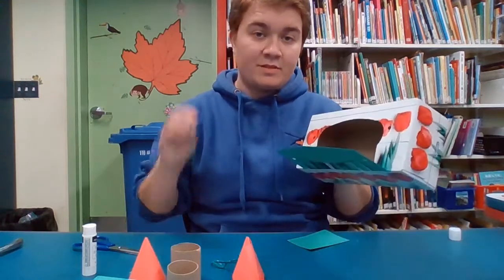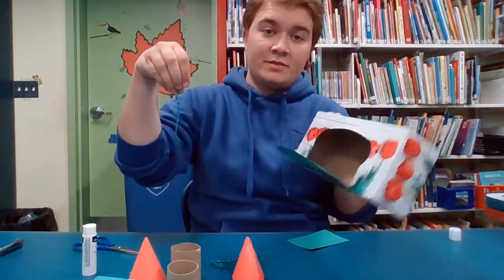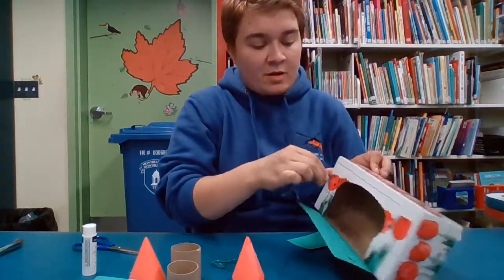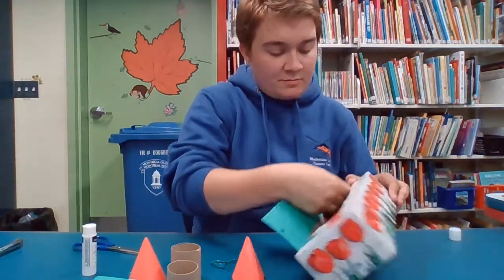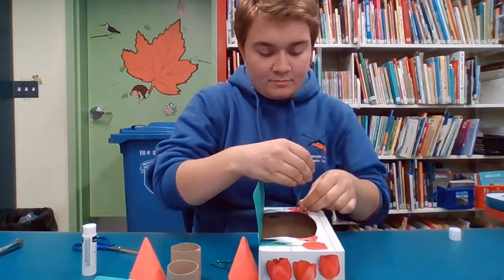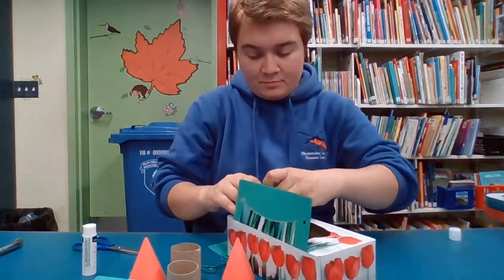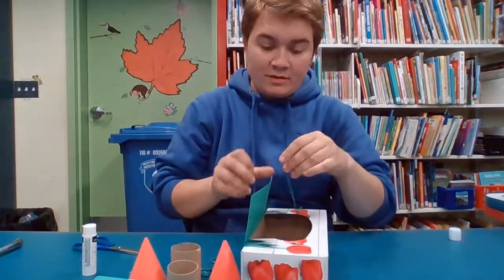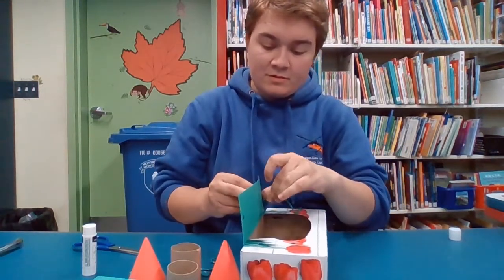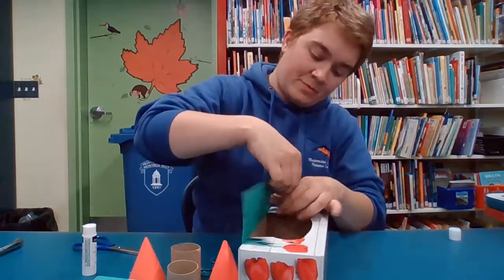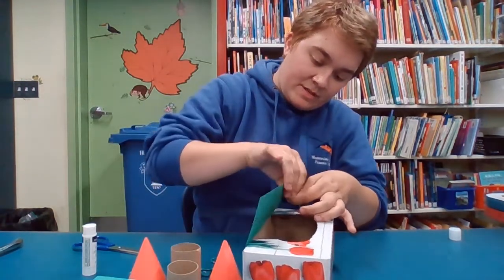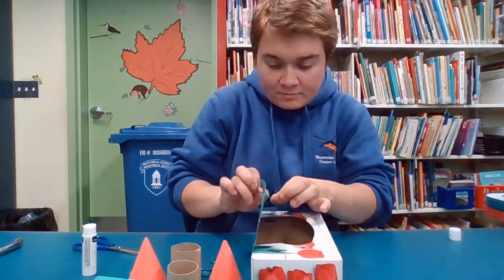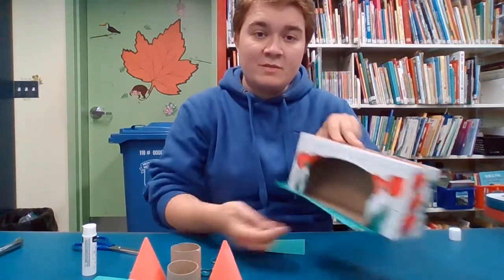Now we're gonna put the strings so the drawbridge can be held up. One end goes into the hole that's in the cardboard and you tie a knot. And the other end goes into the colorful sheet of paper and you also tie a knot. And then you do the same thing on the other side.